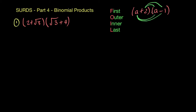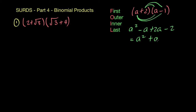So what you end up with is A times A, which is A squared, then A times minus 1, you get minus A, then plus 2 times A gives you plus 2A, and then plus 2 times minus 1 gives you minus 2. You then collect like terms: A squared, then minus A plus 2A gives you plus A, and then minus 2.